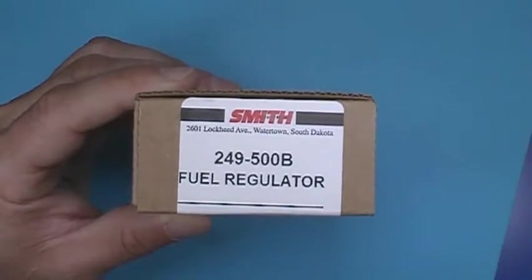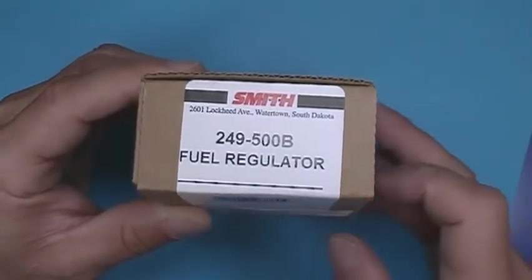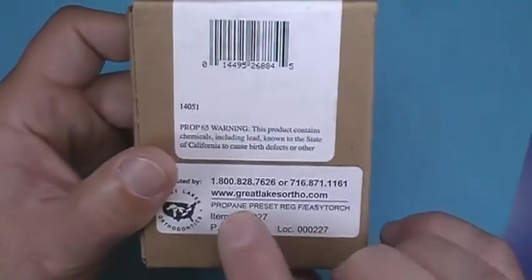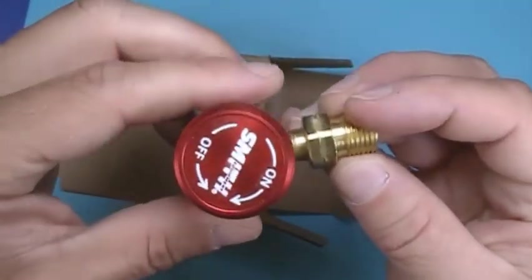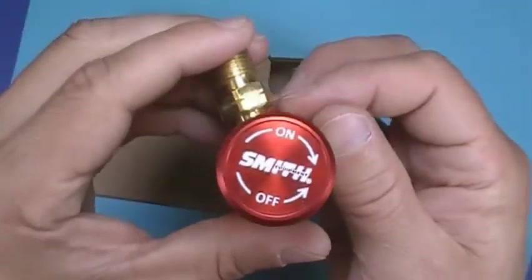Remove the fuel regulators from their boxes. Here, the propane regulator will be set up. Once the regulator is removed from its package, make sure the dial is in the off position.